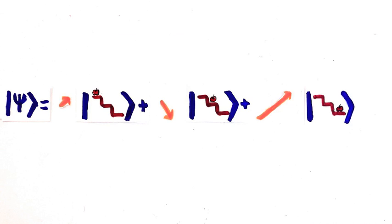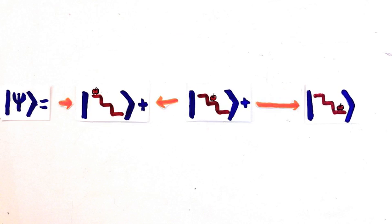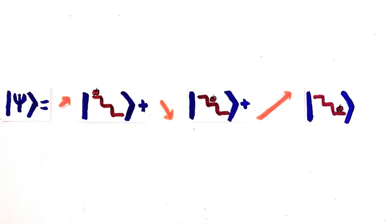So the coefficients of the wave function are like little arrows of different lengths. If they're all real, the arrows point left or right. If they're complex, then they can point in any direction. But the Born rule is the same for both cases.